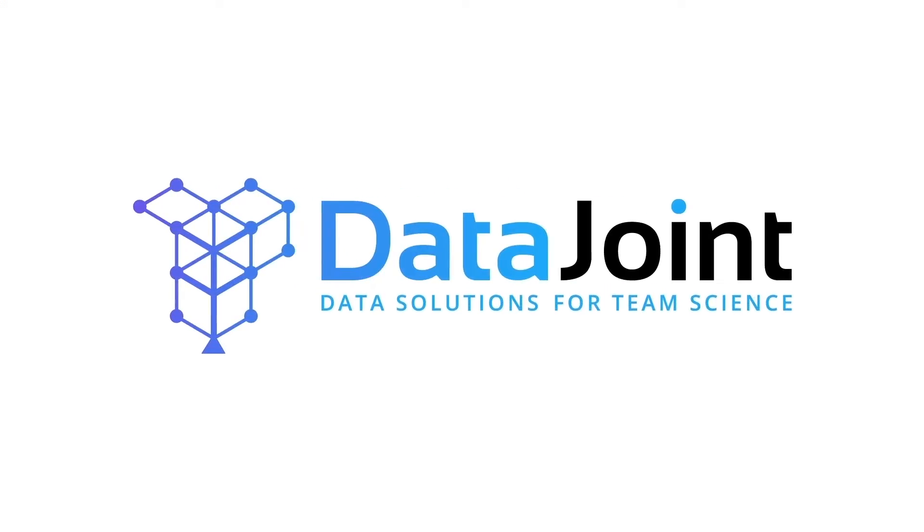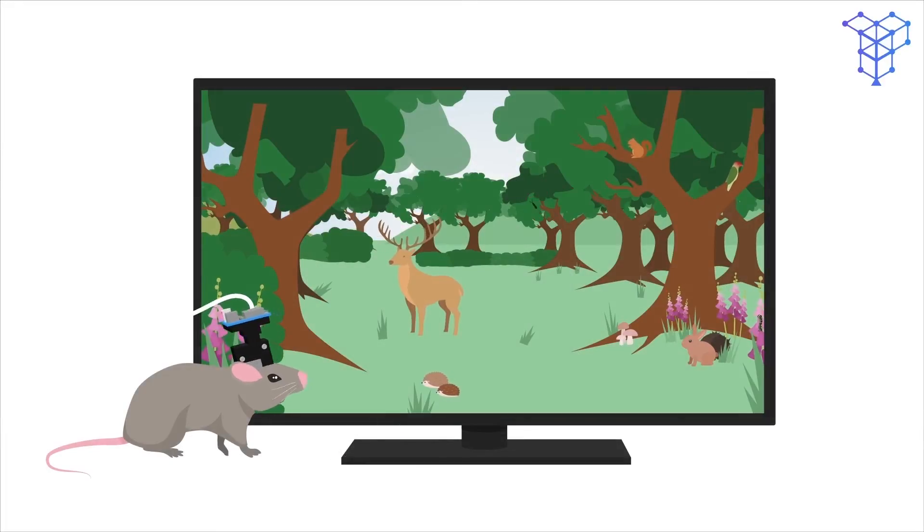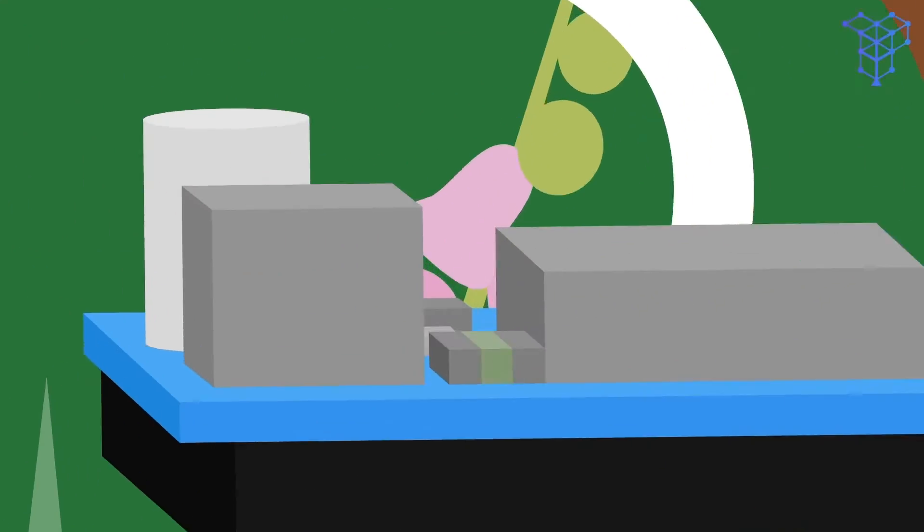Cue DataJoint, the open-source software framework that solves two problems at once. First, DataJoint structures your experiment data in a shared database. Then, DataJoint automates computations for data collection and analysis.